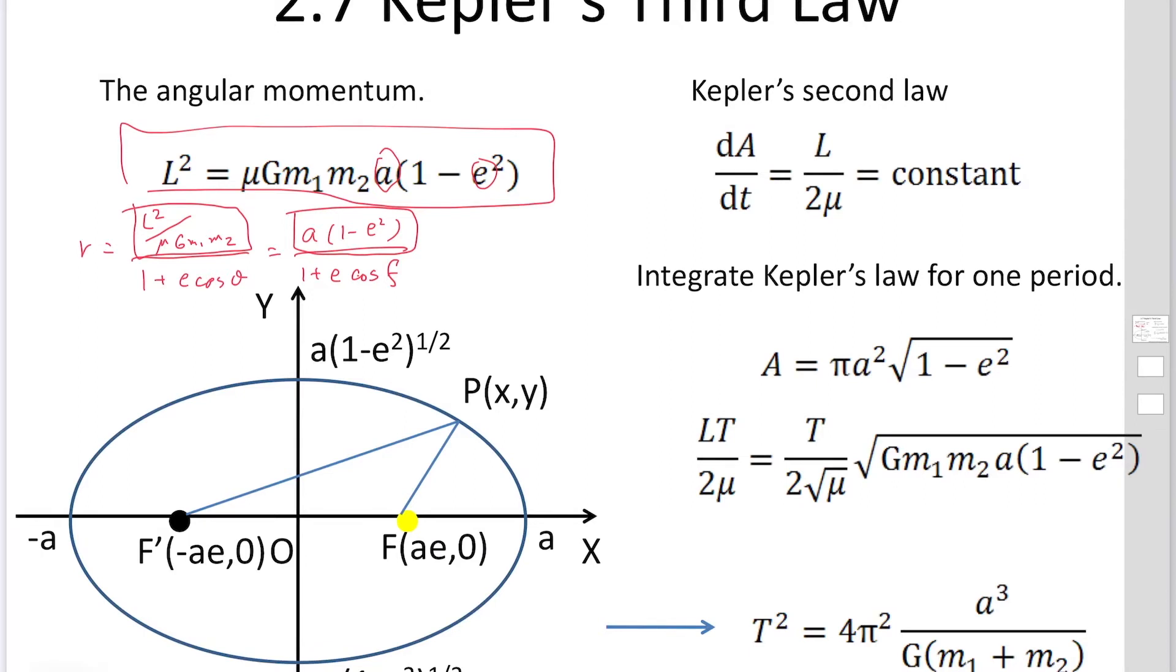Then we are going to use Kepler's second law. Kepler's second law says dA/dt is equal to L over 2μ.